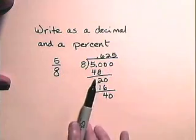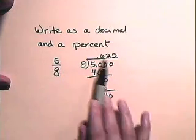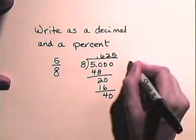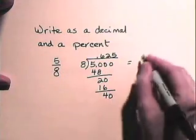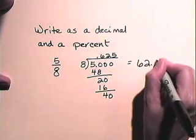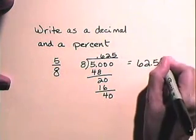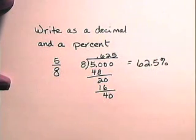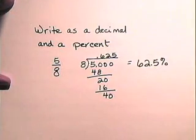Now we need to write it as a percent. To write this as a percent, we move the decimal two places to the right and attach a percent sign. So five-eighths is 62.5%, or sixty-two and one-half percent.